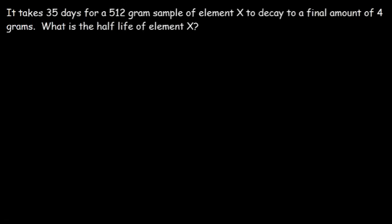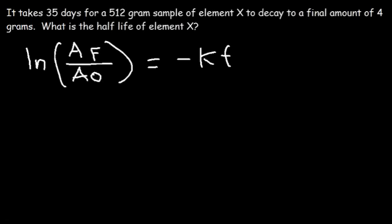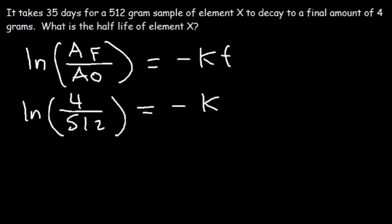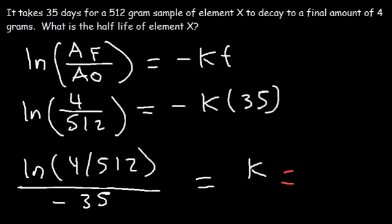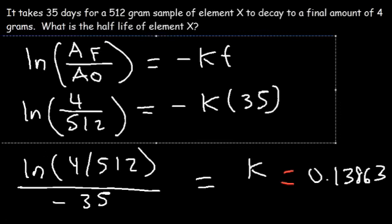Use the equation: ln(AF / A₀) = −KT. The final amount is 4, the initial amount is 512, and the time is 35 days. So K equals ln(4/512) divided by negative 35. The natural log of 4/512 is negative 4.852, and dividing by negative 35 gives K = 0.13863.